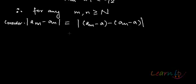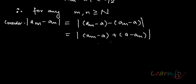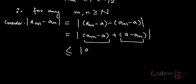We can write it as a_n minus a plus a minus a_m. Now, this is one real term, so I can use the triangle inequality here. This will be less than or equal to the mod of the first part plus the mod of the second part.